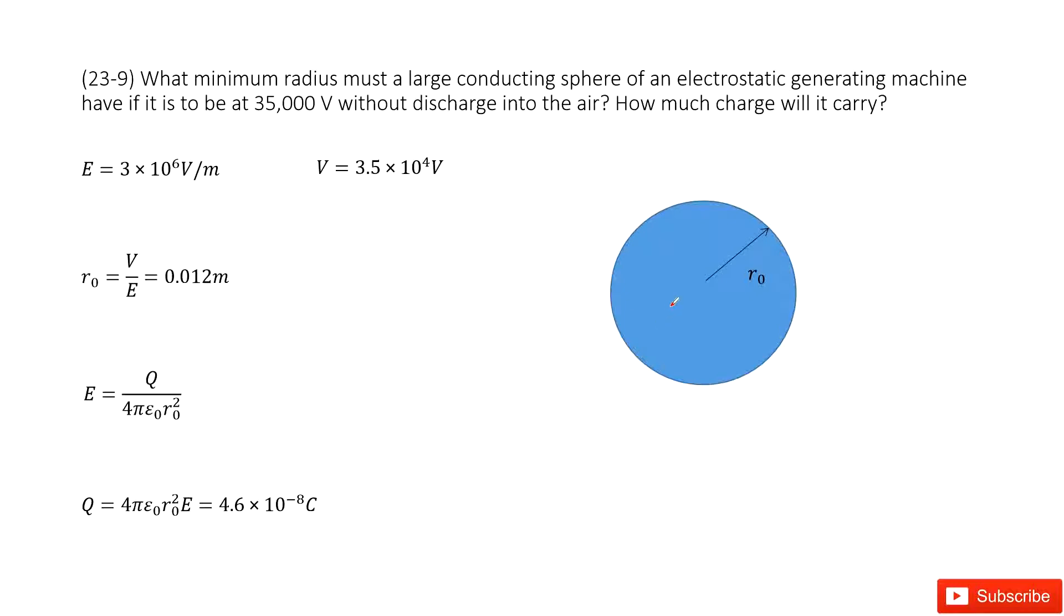We need to find the radius of this large conducting spherical object. The keyword 'conducting' tells us the charge is at the surface, right? And the electrostatic generated motion.